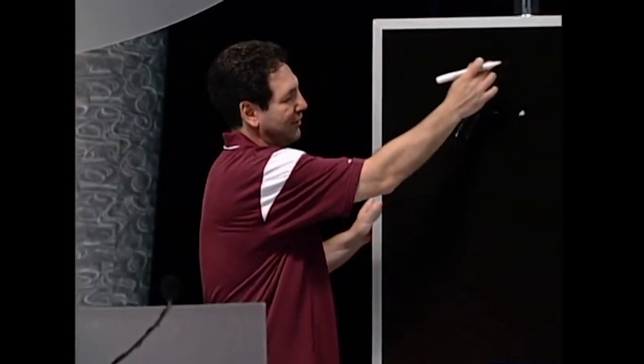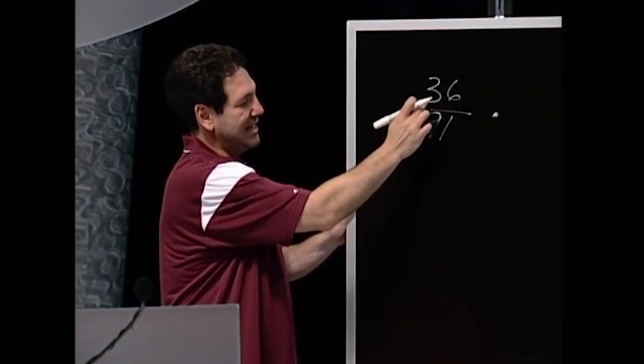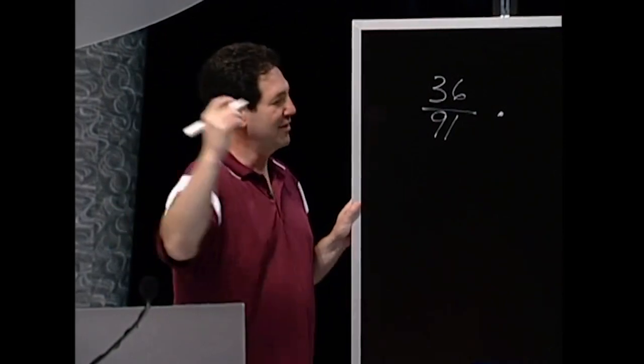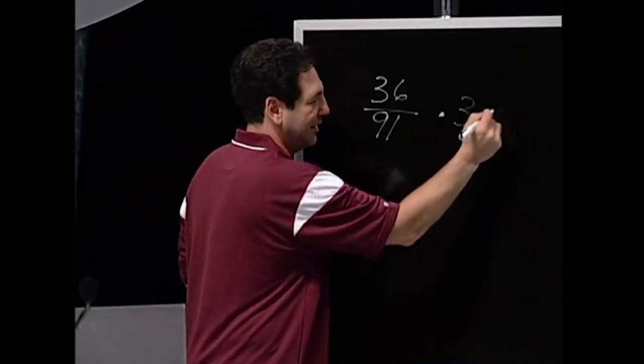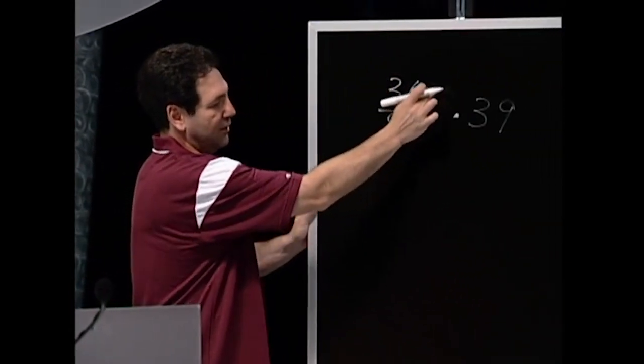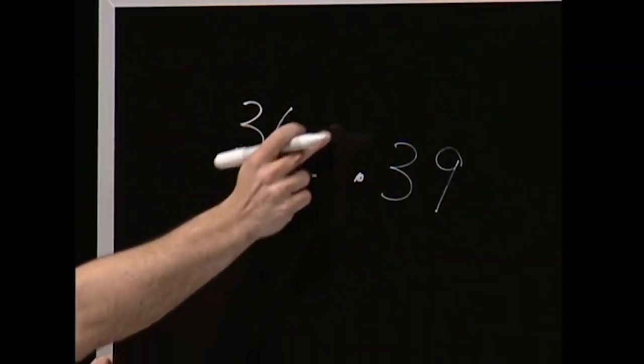To get the first two digits of the answer, you look at the whole number, 36, and add the tenths digit to it. 36 plus 3 is? 39. Does everyone understand how to get the first two digits? Yes. We'll go again. 36, the whole number in the numerator, plus the tenths digit. 36 plus 3 is 39.